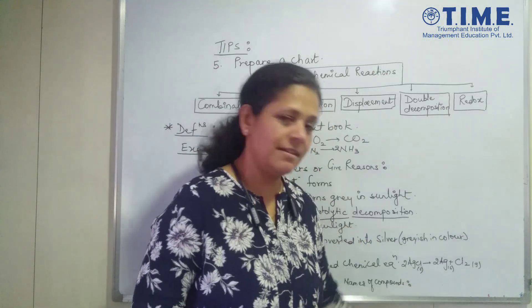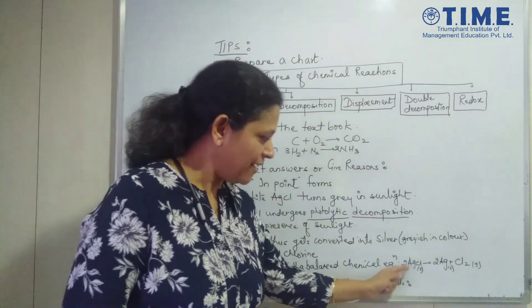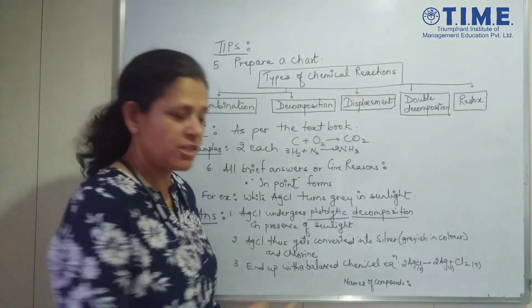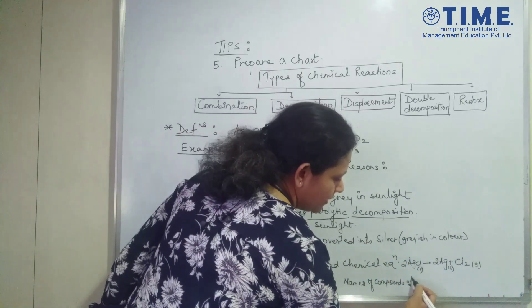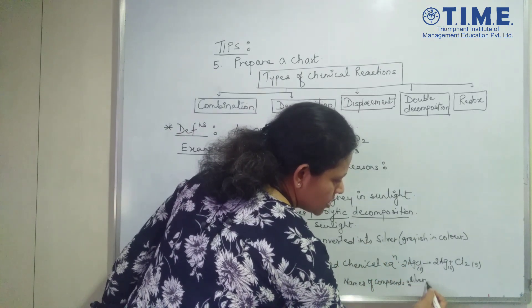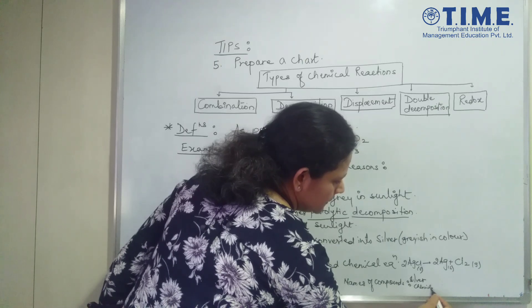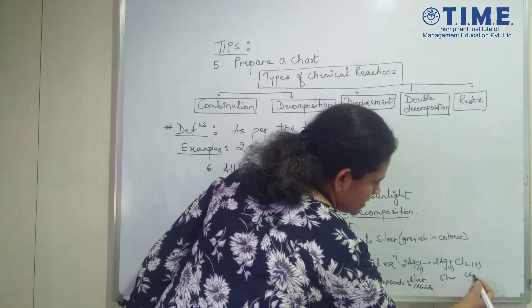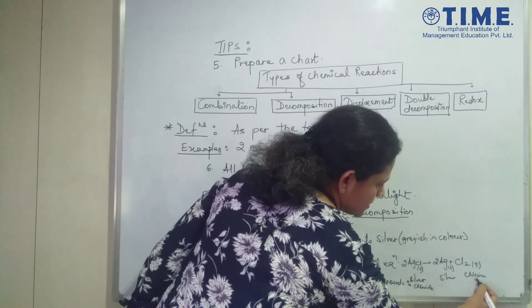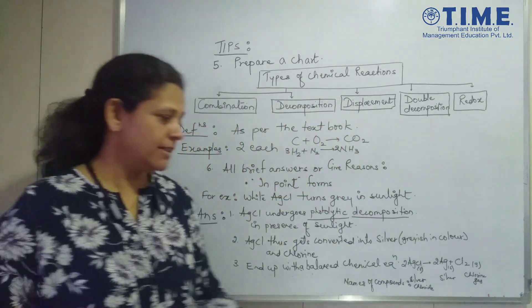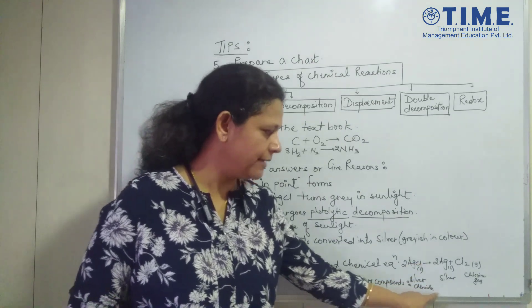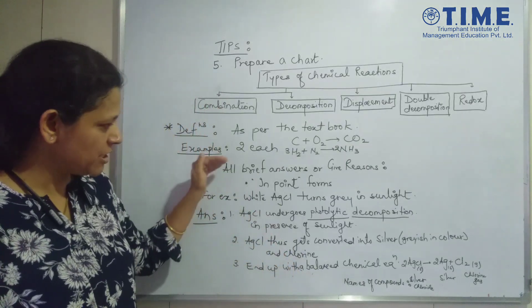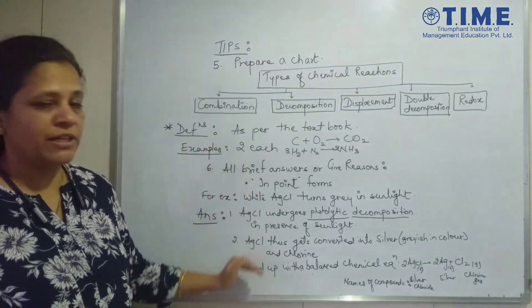So I have written my balanced chemical equation. After this, what is important is write the names of the compounds. Just below the equation, write what it is in words. So this is my silver chloride. And this is my silver. And this is chlorine gas. So what is important is writing the equation and as well as writing the names of the compounds. So that completes my give reason in point form.